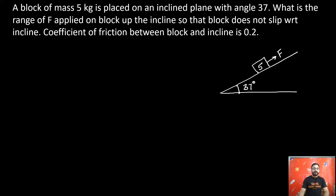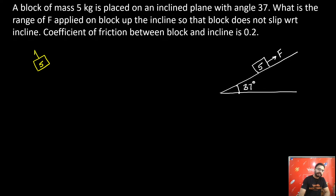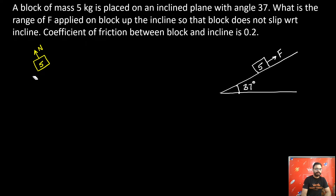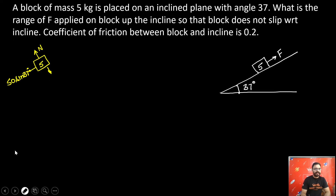First of all, let us start with the free body diagram for this block. For the 5 kg block, there will be a normal force perpendicular to the incline. Taking the components of mg: mg sin 37 acts down the incline, which is 50 sin 37, and mg cos 37 acts perpendicular to the incline, which is 50 cos 37.